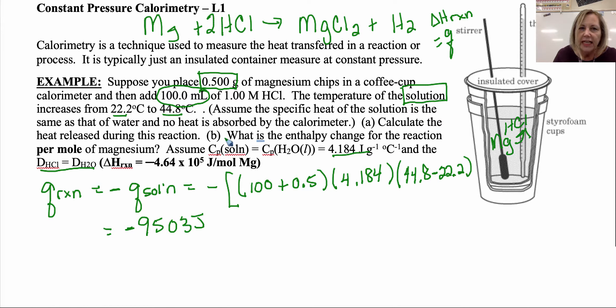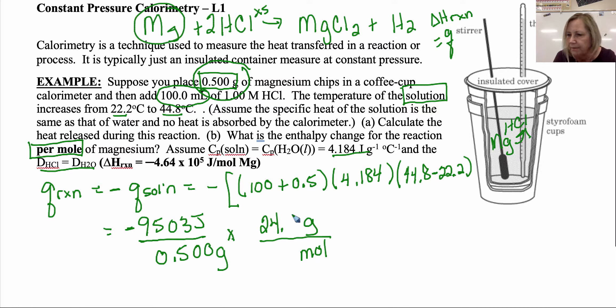Now that's the energy that is involved when I reacted 0.5 grams, so that's that many joules for every 0.500 grams. The question asks me what is it per mole of magnesium. So I have to eliminate grams and I need to get moles in my denominator. Mass to moles use molar mass. HCl is in excess; we're not going to deal with the HCl at all. It's all about the magnesium.